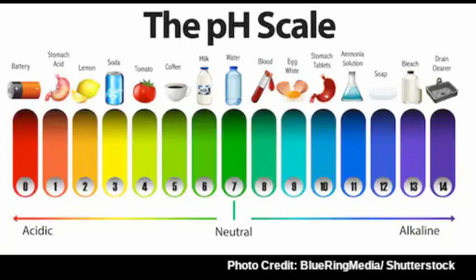Drinking water is usually pH 7. Below 7 is acidic — milk, lemon juice, and Coca-Cola are all acidic. Egg whites and soap are alkaline. Blood is alkaline. So there are many acidic and alkaline things in our day-to-day life. If we want to bring pH below 7 we add acid to increase the hydrogen ion concentration, and if we want to make it alkaline we add hydroxyl ions by adding an alkaline substance.